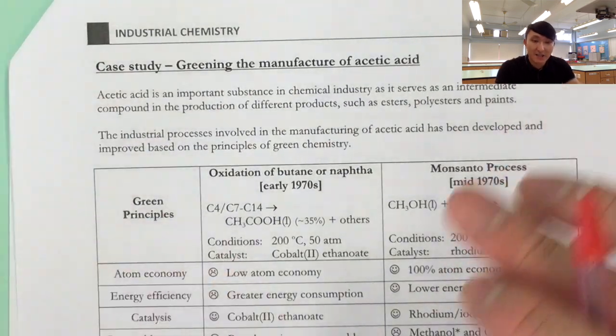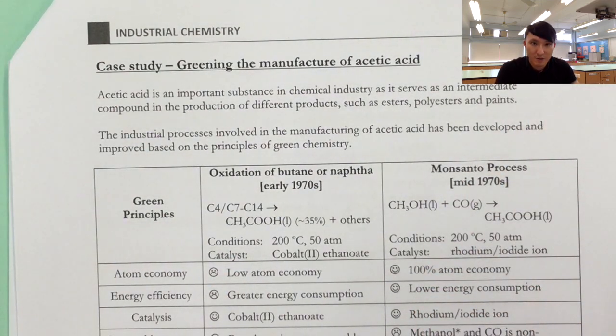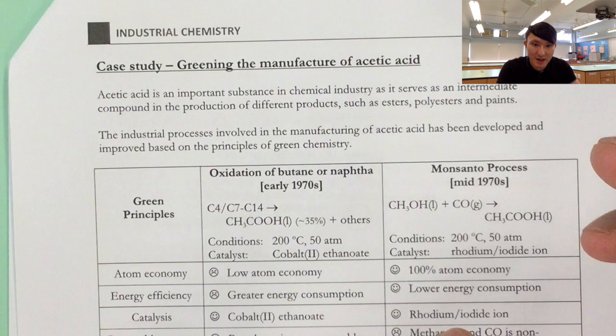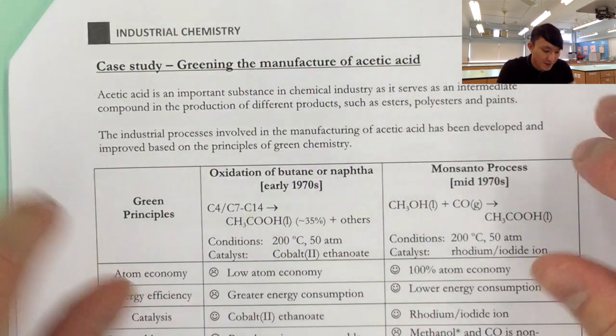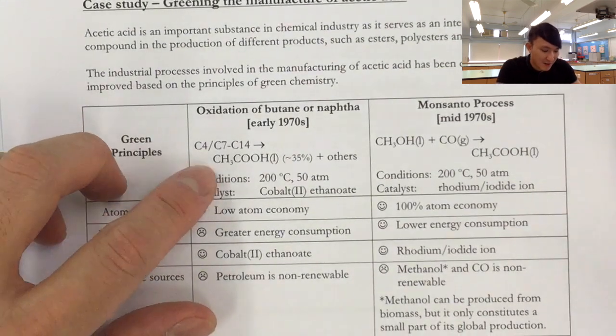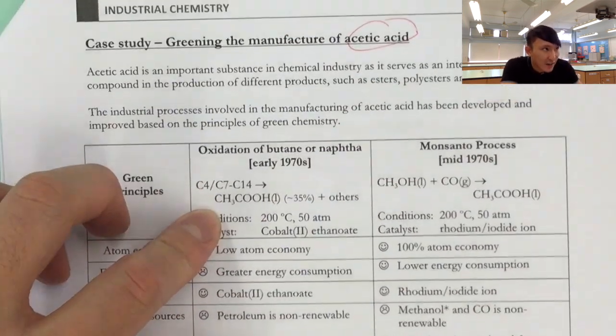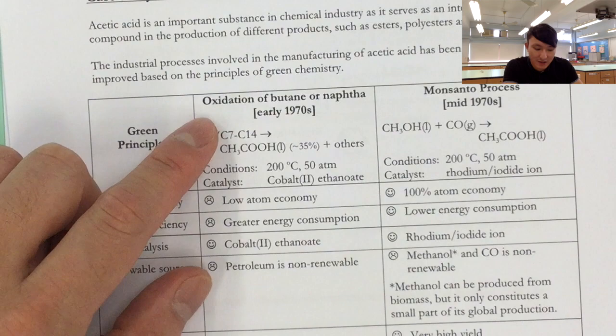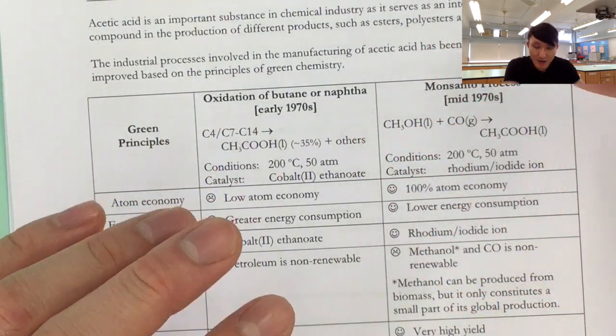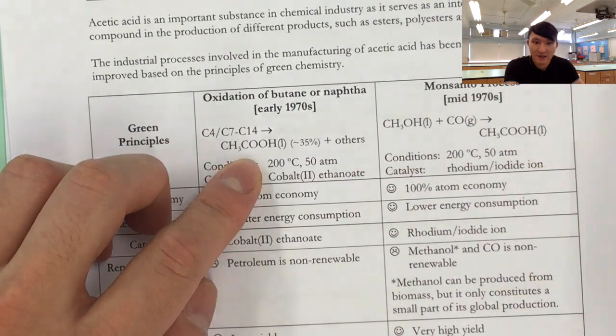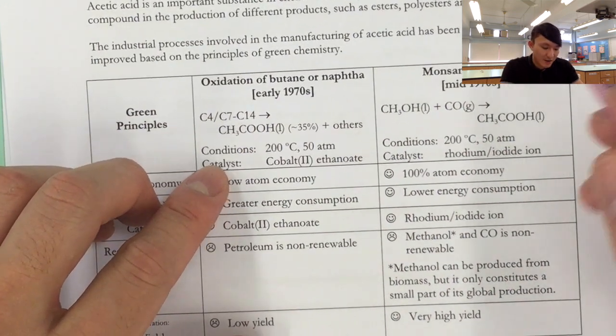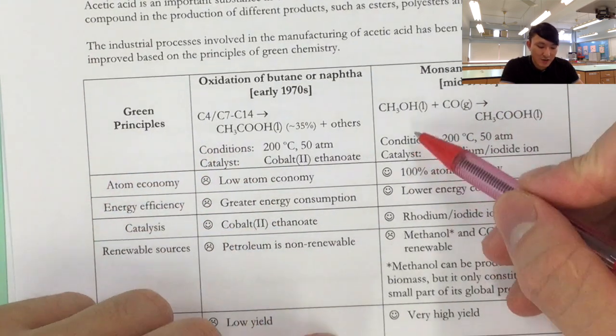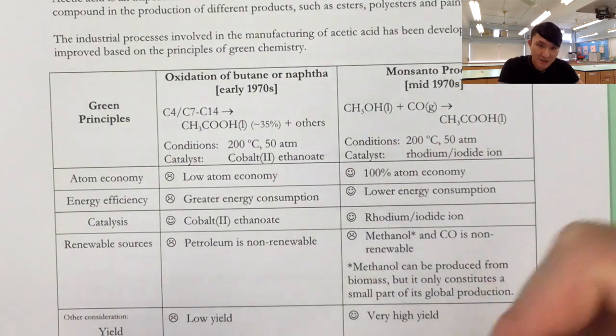At the back, we have some case studies, some actual industrial processes where the principle of green chemistry is employed. See how it can be improved from time to time. Now we want to make ethanoic acid or acetic acid. Now the very old method is to do direct oxidation of butane or naphtha. So direct oxidation of hydrocarbon forming ethanoic acid and other things.